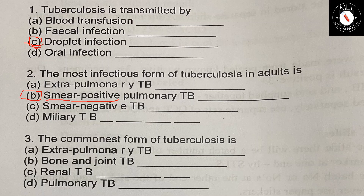Third question: The commonest form of tuberculosis is — option A: extra-pulmonary tuberculosis, option B: bone and joint tuberculosis, option C: renal TB, option D: pulmonary TB. The answer is option D, pulmonary TB.